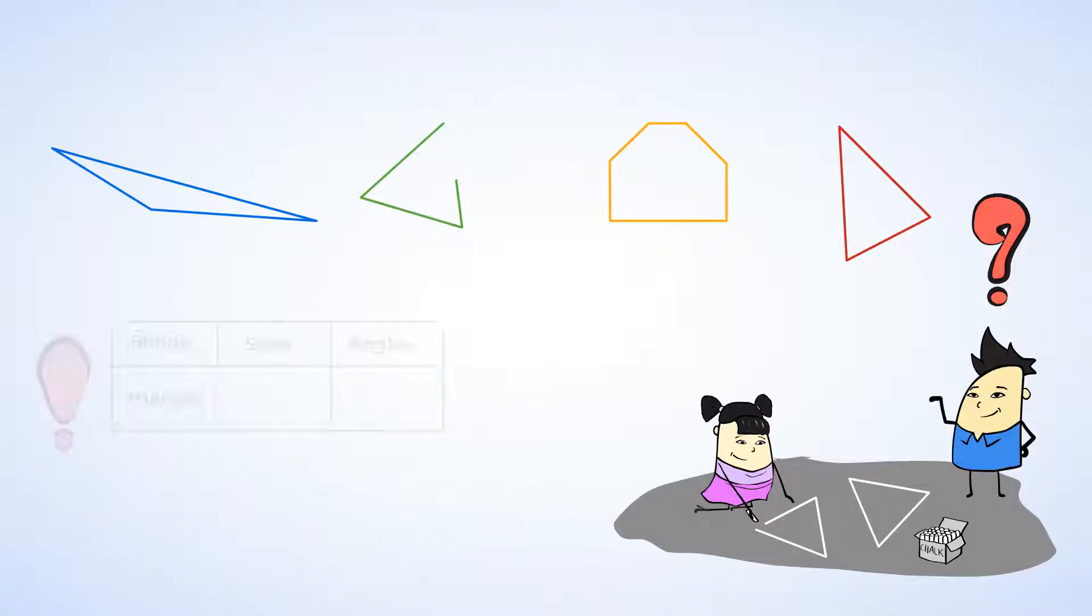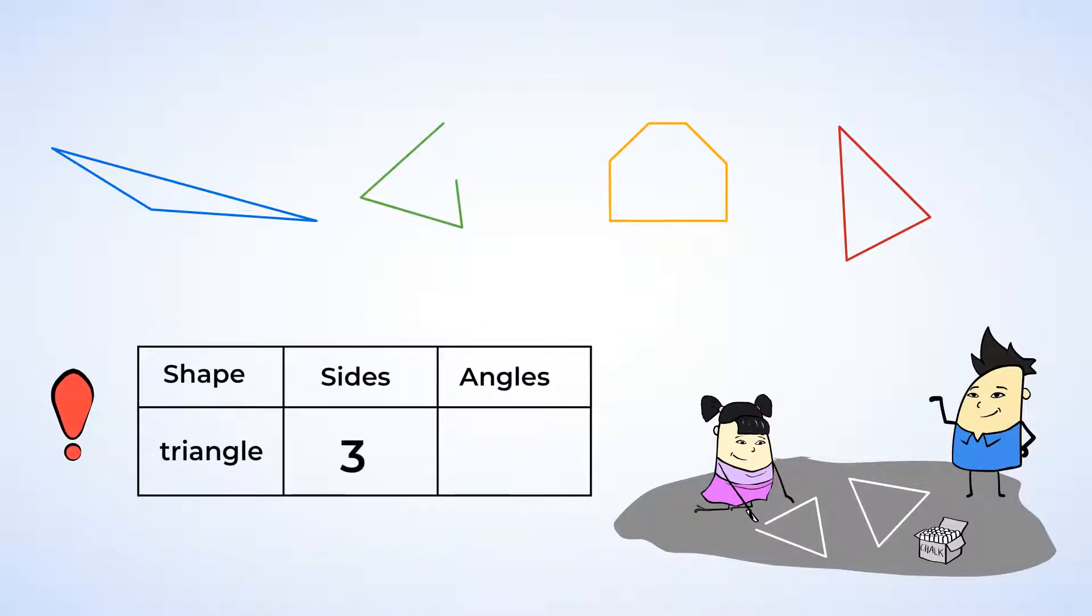Remember, a triangle has 3 sides and 3 angles. So, let's check out each of these shapes. The blue shape has 3 sides and 3 angles, so yeah, it's a triangle. The green shape has 3 sides, but only 2 angles. No, this is not a triangle.